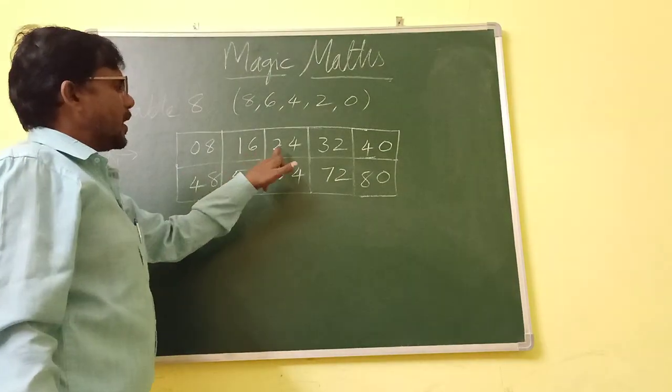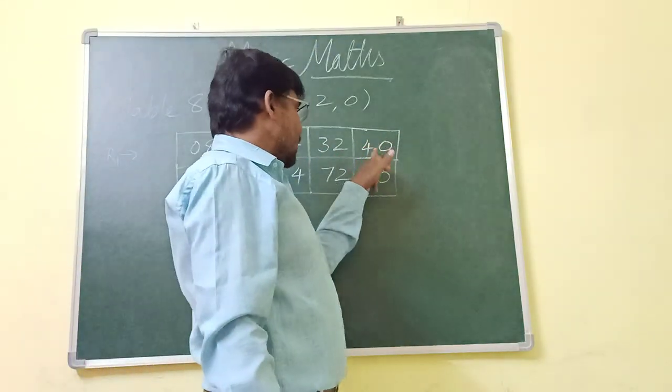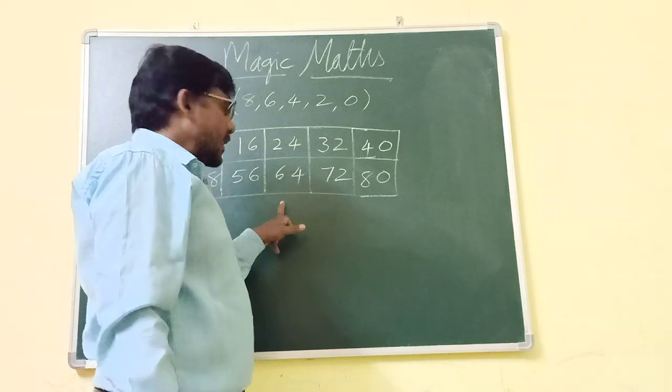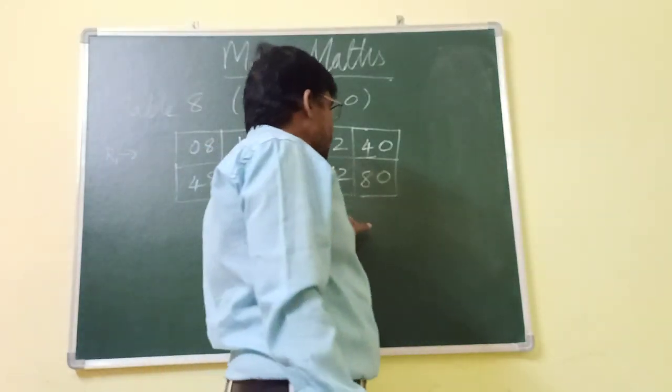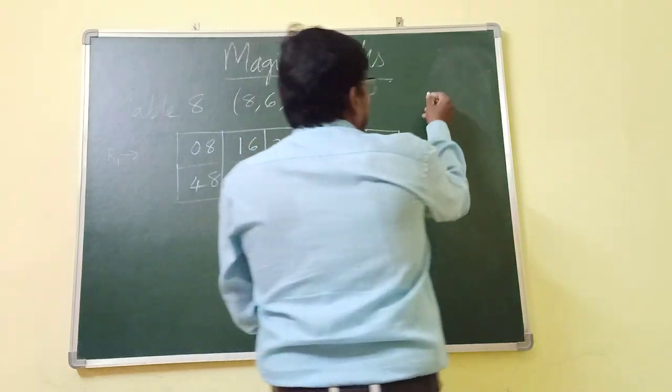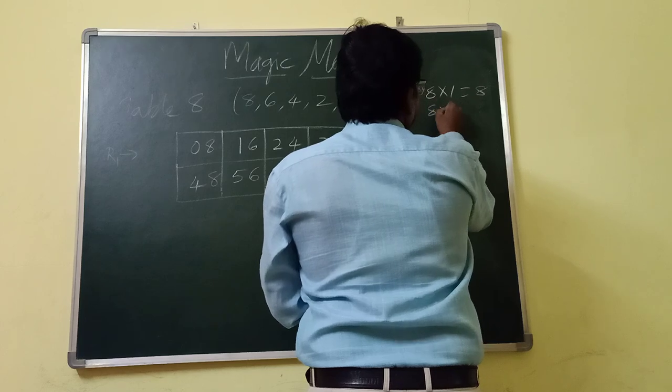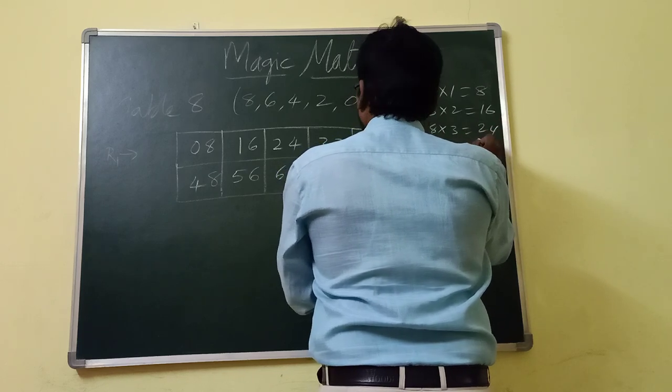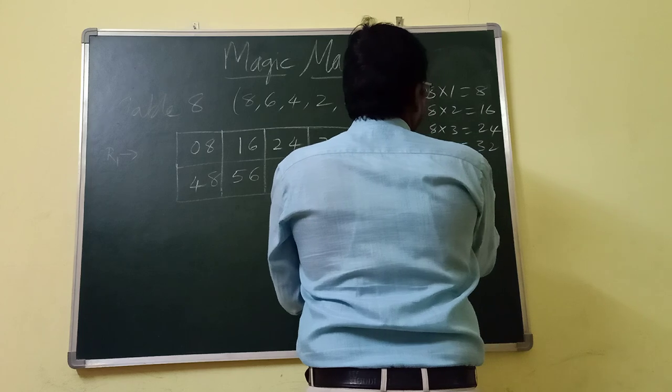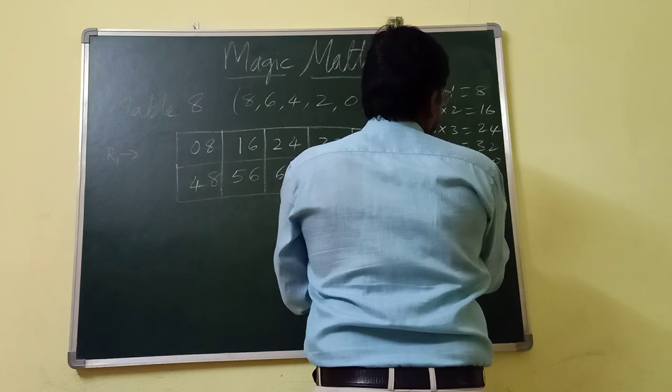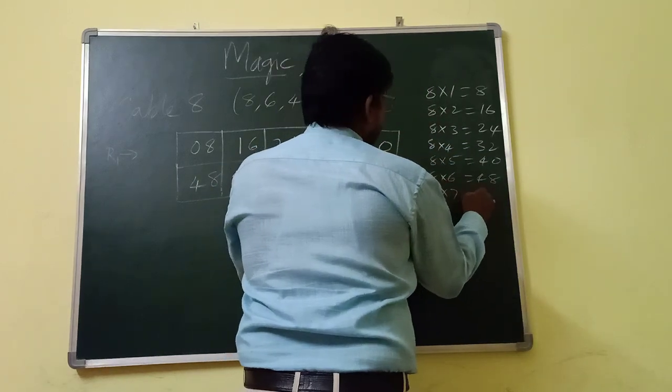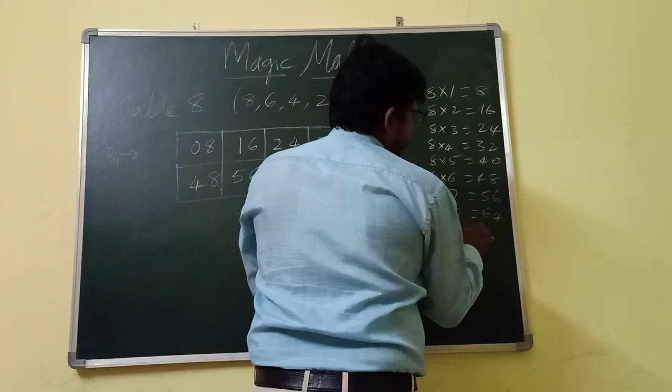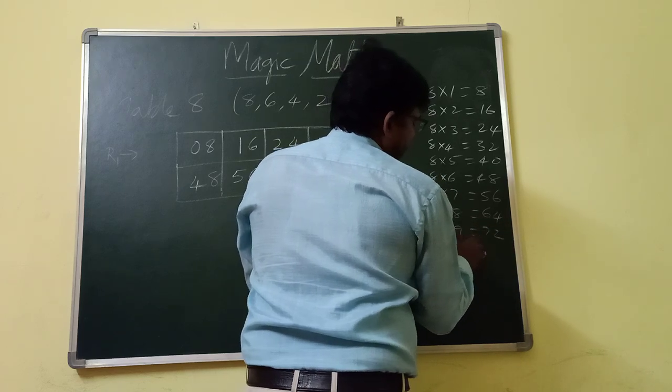8, 1 times 8. 8, 2 times 16. 8, 3 times 24. 8, 4 times 32. 8, 5 times is 48. 8, 6 times 48. 8, 7 times 56. 8, 8 times 64. 8, 9 times is 72, and 8, 10 times is 80.